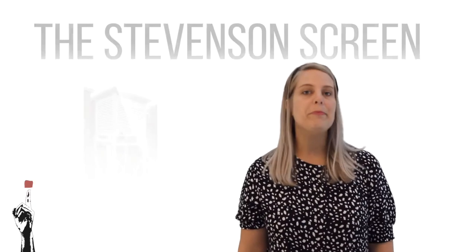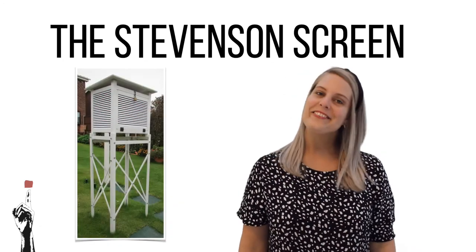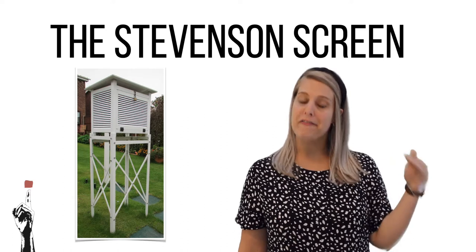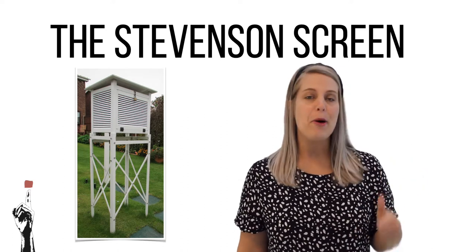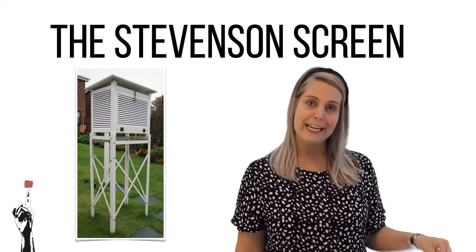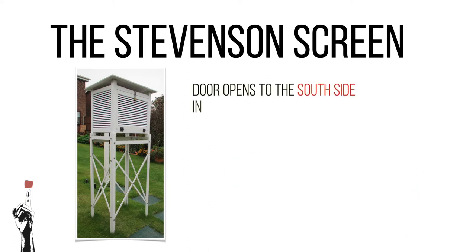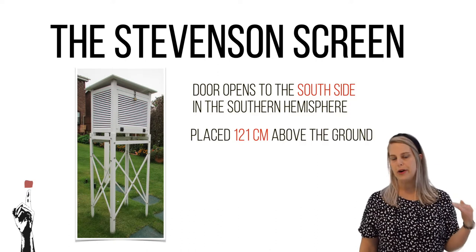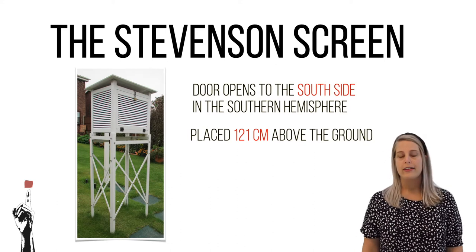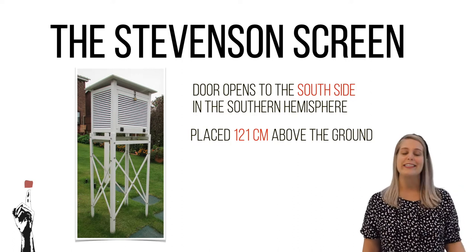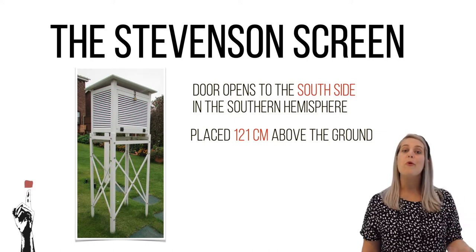Another way to record the weather is by a Stevenson screen — weird name right? The Stevenson screen is a wooden slatted box that is 121 centimeters above the ground, and inside it houses thermometers, barometers and other weather recording instruments. It functions as a standalone weather station. It is placed so that the door opens on the shady side — for us in South Africa that is the south side. The Stevenson screen is placed so high above the ground so that a realistic temperature can be read, since temperatures tend to drop at night and rise during the day.